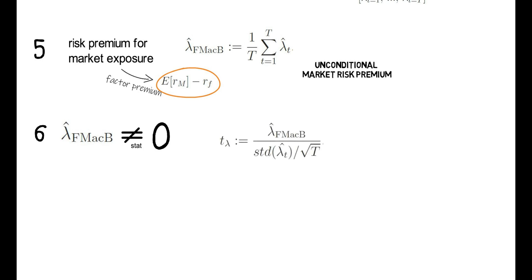So you calculate the ratio between the estimated lambda and you divide that by the standard deviation of the lambda time series divided by the square root of t.